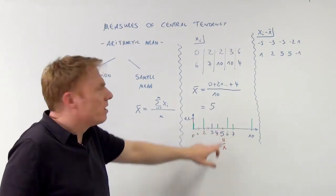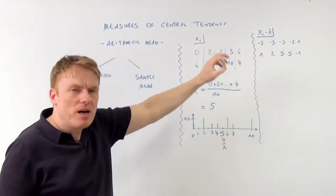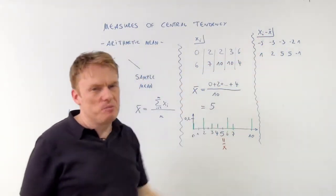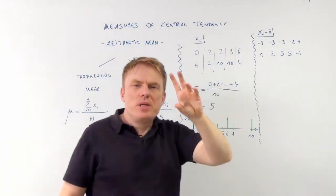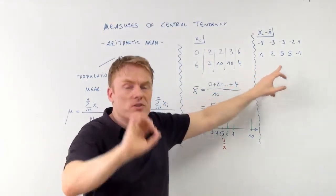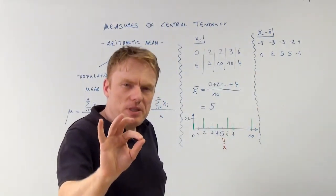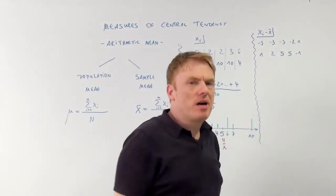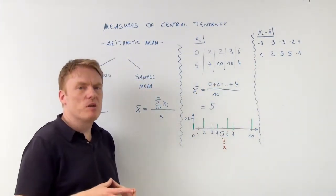Second, we could subtract the sample mean from all possible values — which means 0 minus 5, 2 minus 5, 2 minus 5, etc. — and then we get xi minus x-bar. So we subtract the sample mean from all the possible values. What do we get if we sum up all those values? The answer is clear: it's 0. It's always 0. If we subtract x-bar, the arithmetic mean, from every single value, we get 0 as a sum. Keep this in mind — the sum of all values minus x-bar is 0. That's very important.